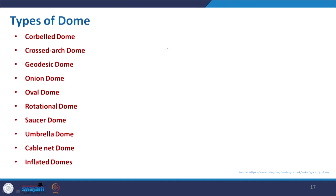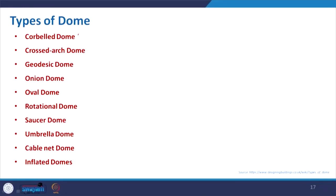Now, the types of dome. Different searches give different lists. I have specified the domes which are very popular, but there will be some additions — I will be happy to hear from you if I have missed any. The list starts with: Corbeled dome, Crossed Arch dome, Geodesic dome, Onion dome, Oval dome, Rotational dome, Saucer dome, Umbrella dome, Cable Net dome, and Inflated dome.